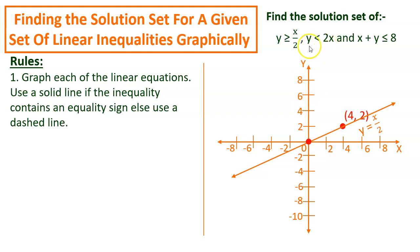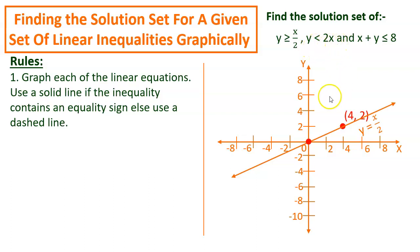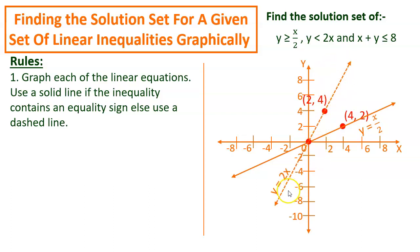Coming to the second inequality, y is less than 2x. Converting this to an equation, it will be y equal to 2x. But this time it will be a dashed line because this inequality doesn't contain the equal to sign. The first point taken is the origin, because when x is equal to 0, y is also equal to 0. The second point taken is (2, 4), because when x equals 2, 2 times 2 is 4, so y equals 4.